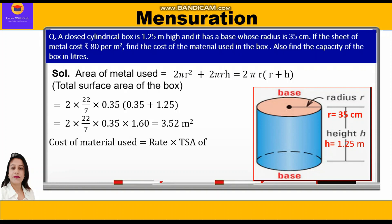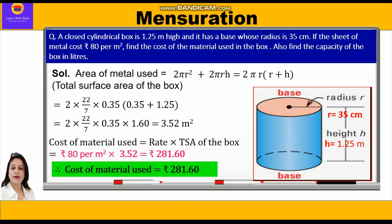The cost of material used is found by multiplying the rate with the total surface area of the box, that is 80 × 3.52, which equals rupees 281.60. So the cost of material used is rupees 281.60, calculated by multiplying the total surface area by the rate.